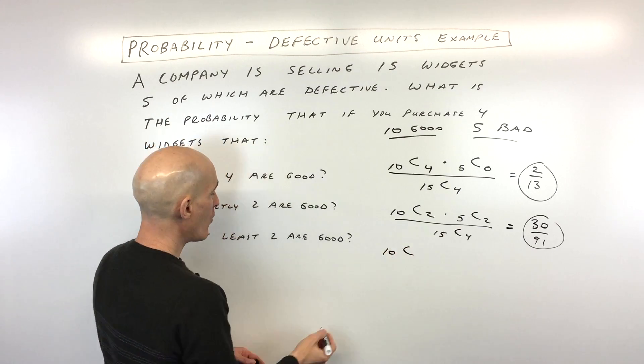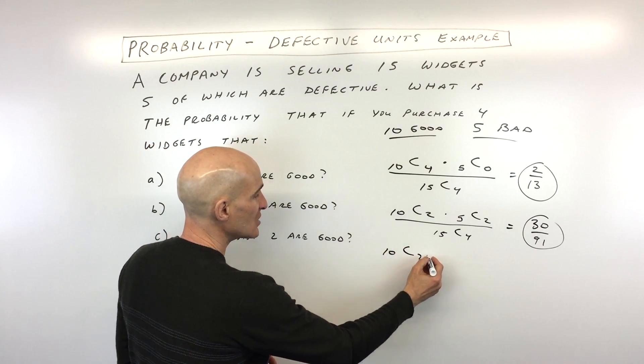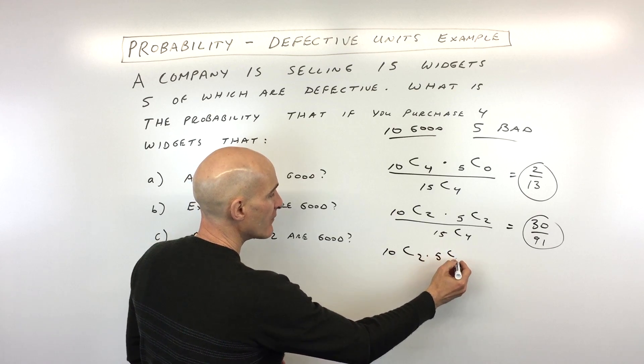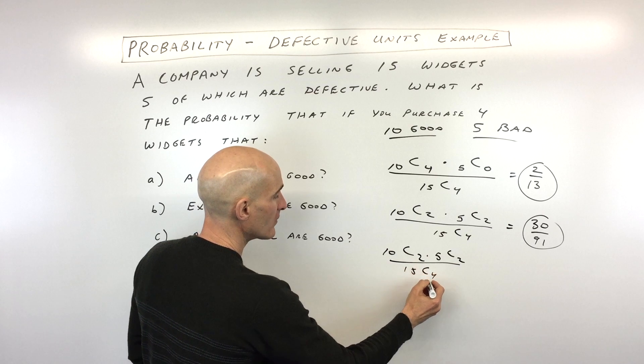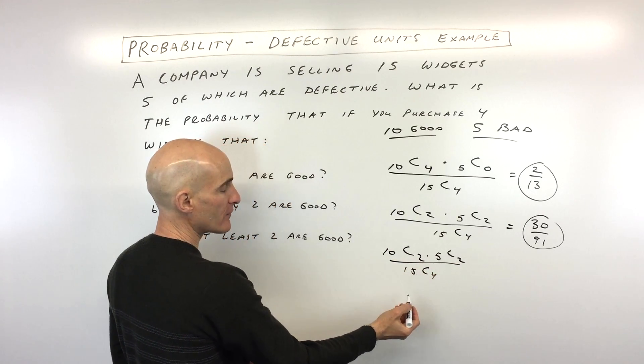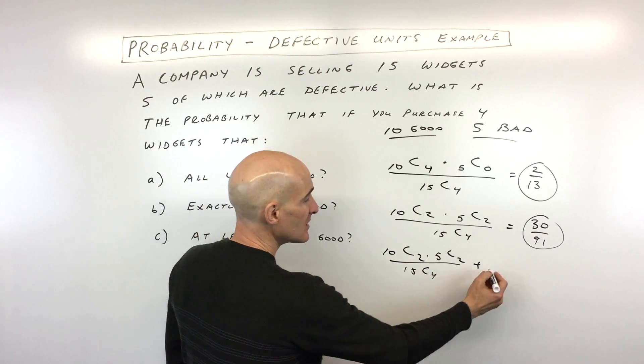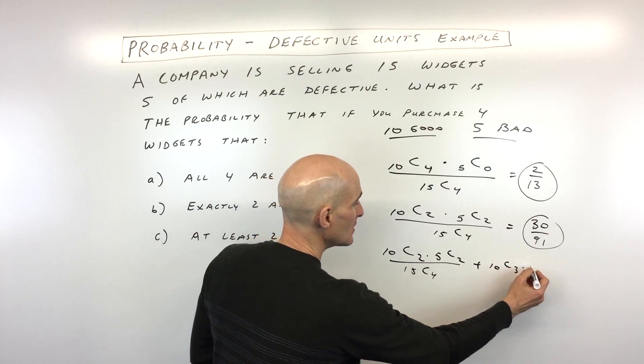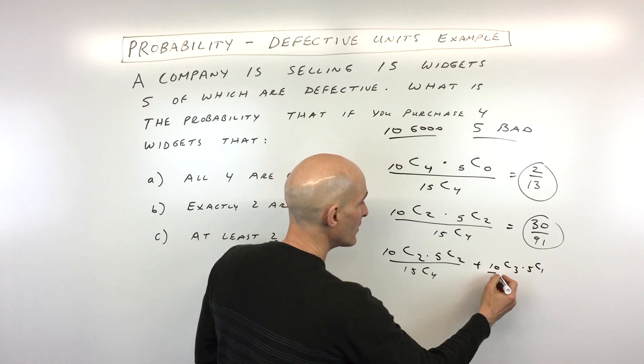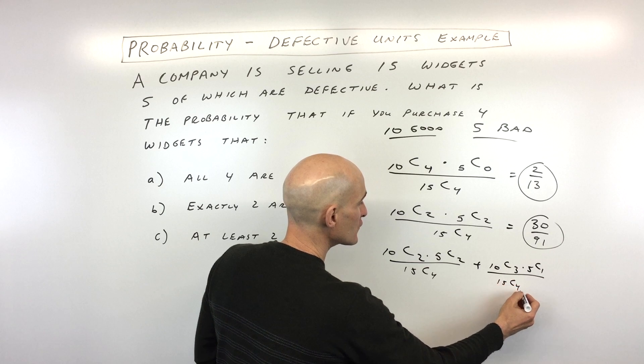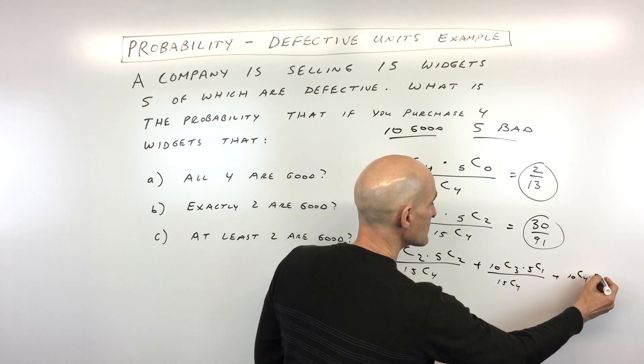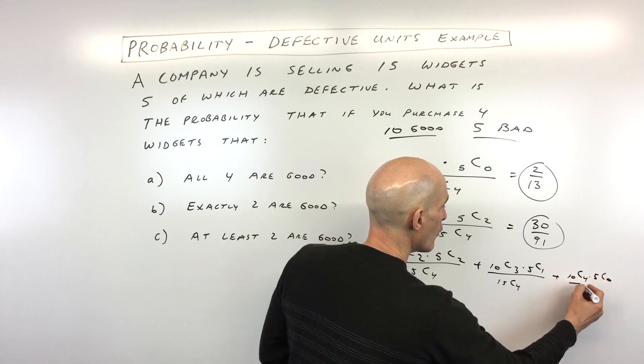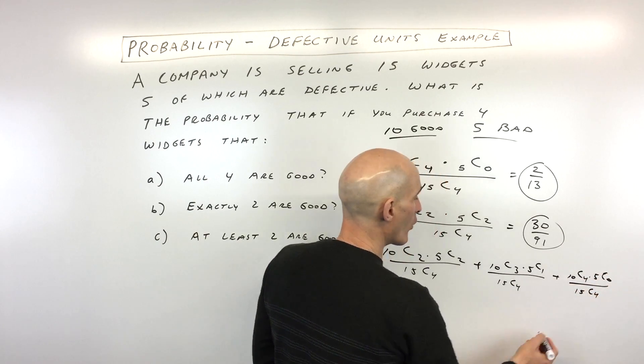So we've got out of the 10, we want two are good, so that's 10 choose two, and then two are going to be bad out of the five bad ones, over 15 choose four, that's the total ways of choosing four out of 15, plus 10 choose three, times five choose one, over 15 choose four, plus 10 choose four, times five choose zero, over 15 choose four.